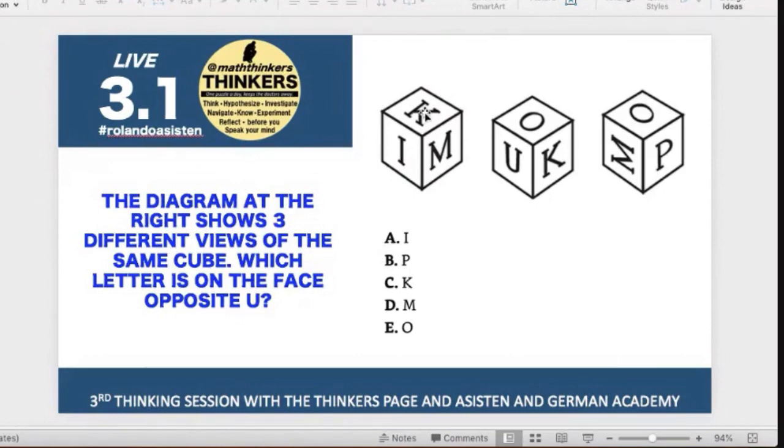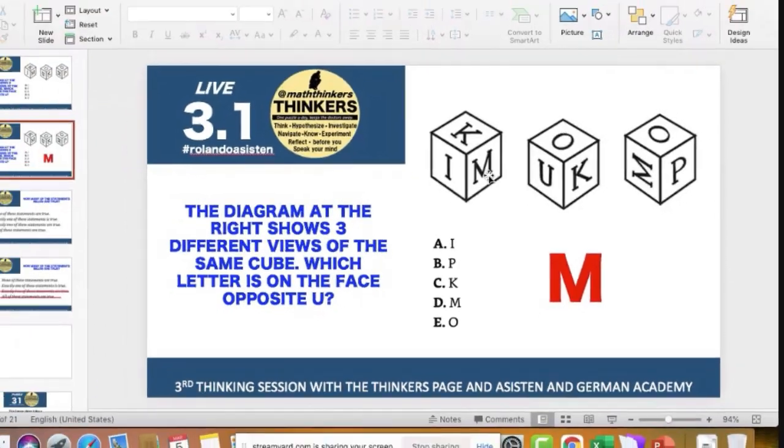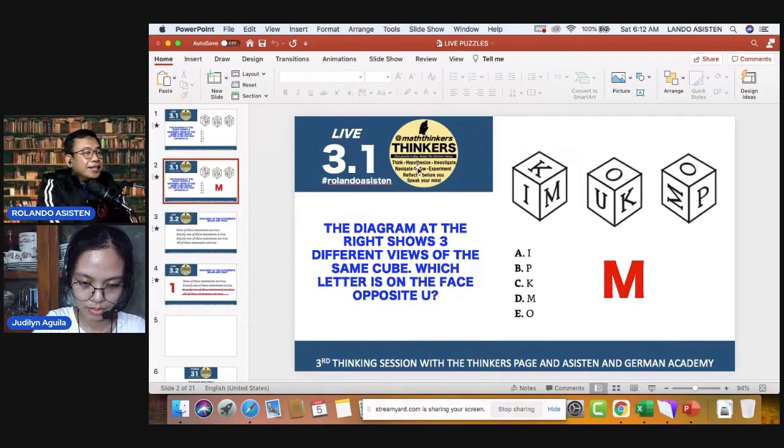If you notice, letter K is here, and letter K is also here in the second cube. Since you would like to know what is the letter opposite letter U, you would like to know what is the letter in this part, which is to the right of letter K. And the clue is given by this first cube. To the right of letter K is letter M. So our answer here is letter M. Here is our next puzzle.